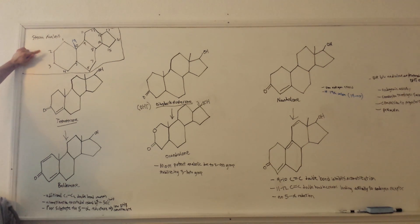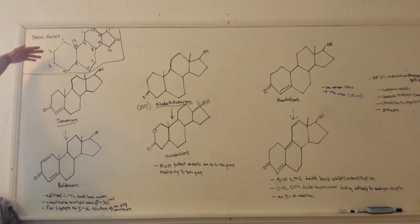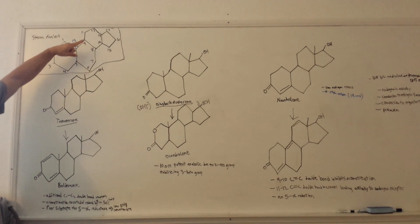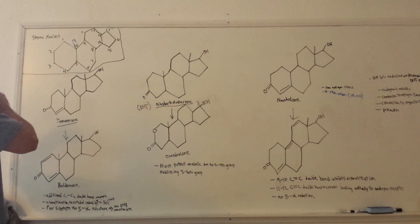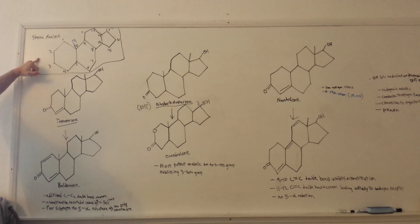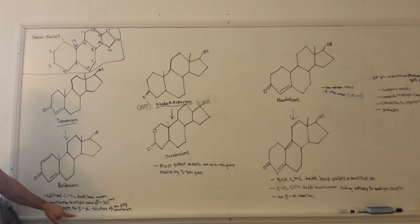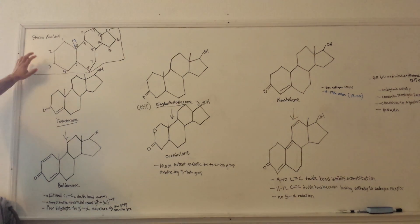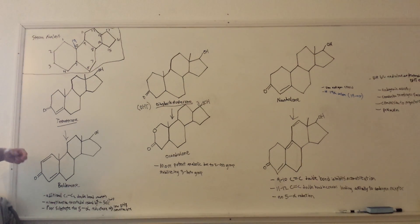I'll start by referring you guys to this structure — this is the steran nucleus, just the backbone of any kind of anabolic steroid or steroids in general. You have this numbering system here that we're going to be referring to whenever discussing different alterations to structures and wherever certain functional groups are, so I'll be going back to this to help you guys follow along.